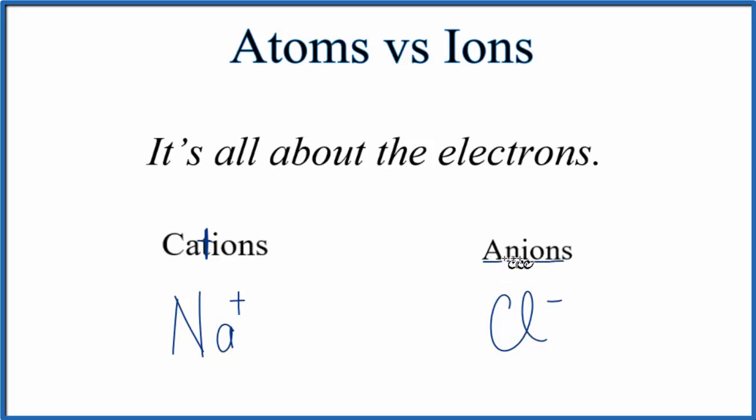So anions, A negative ion. That'll help you remember that they're negative. The cations, they lost an electron. That made them positive. The anions, they've gained electrons, so they become negative. Neutral elements, like we find on the periodic table, they have the same number of protons and electrons.